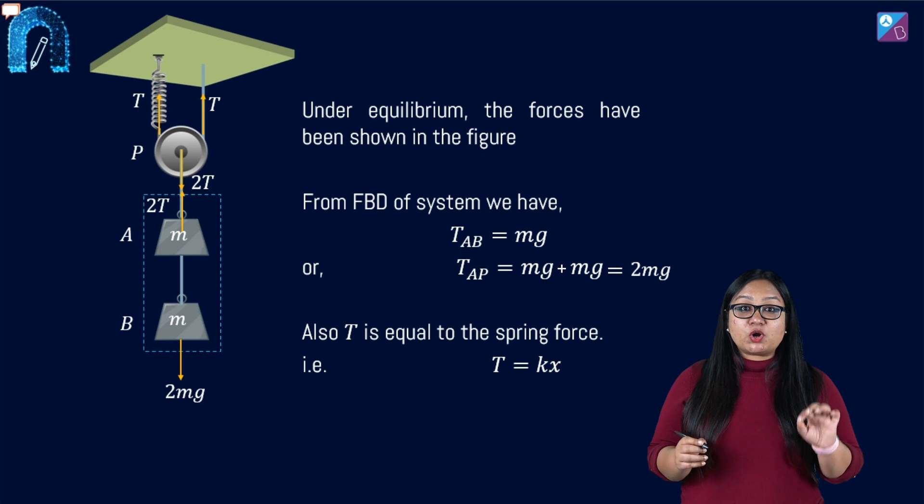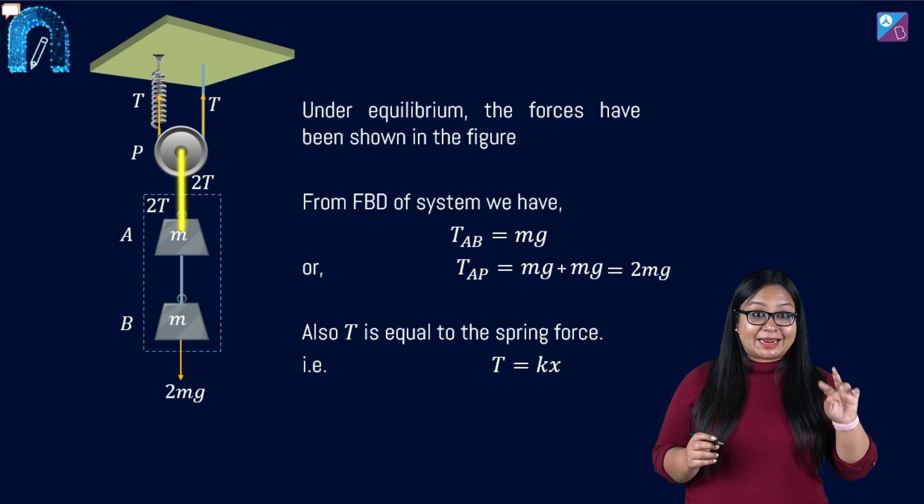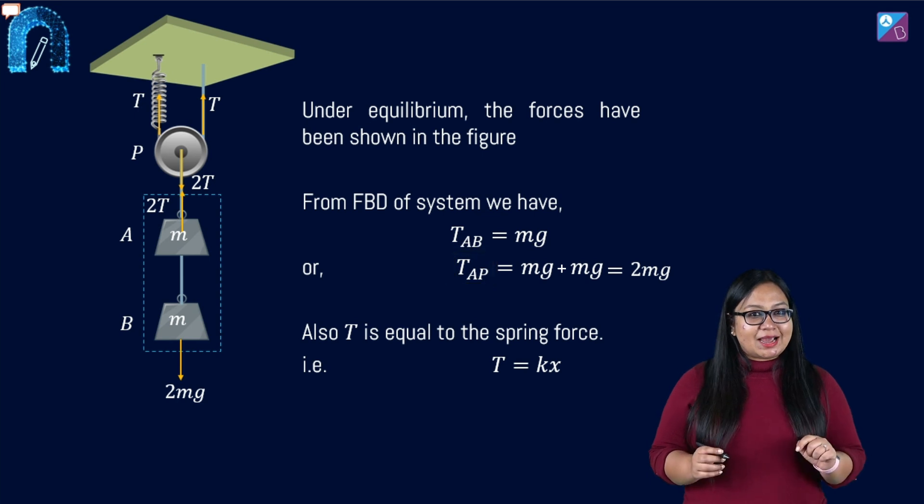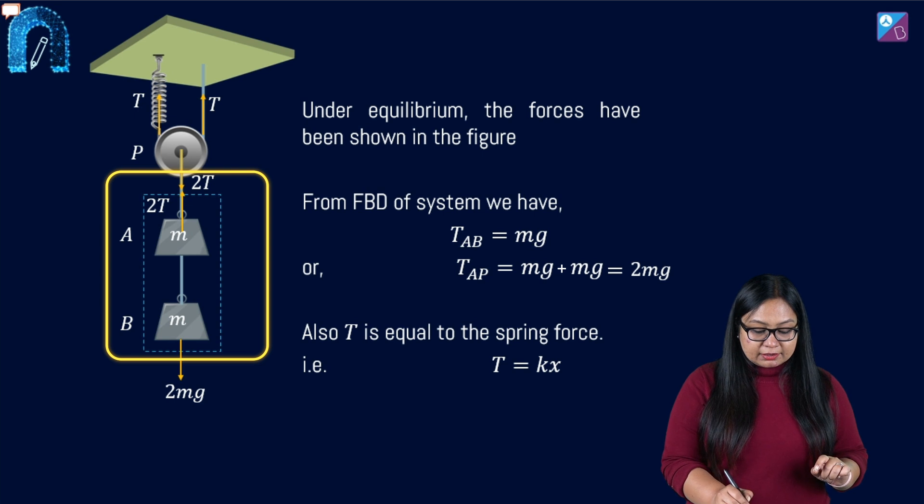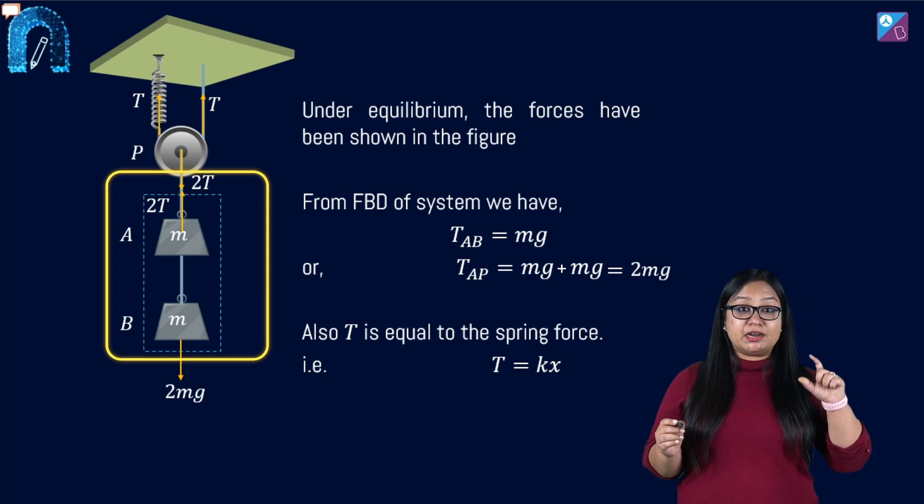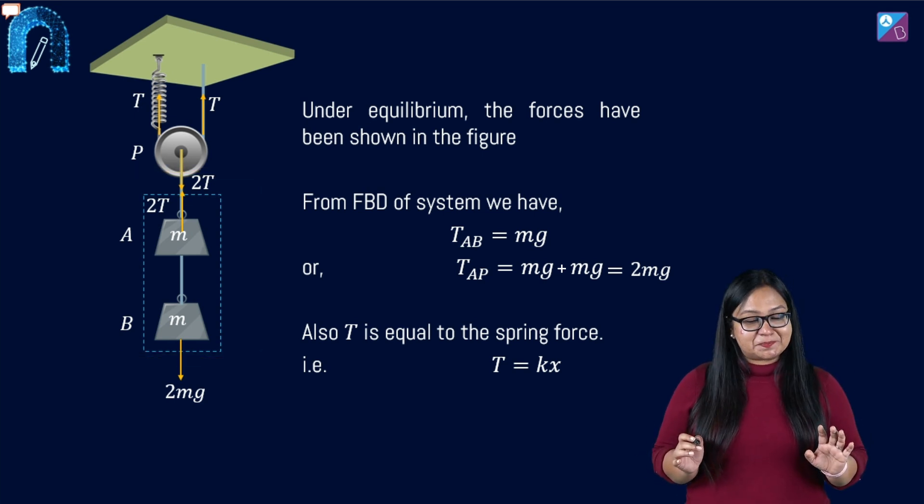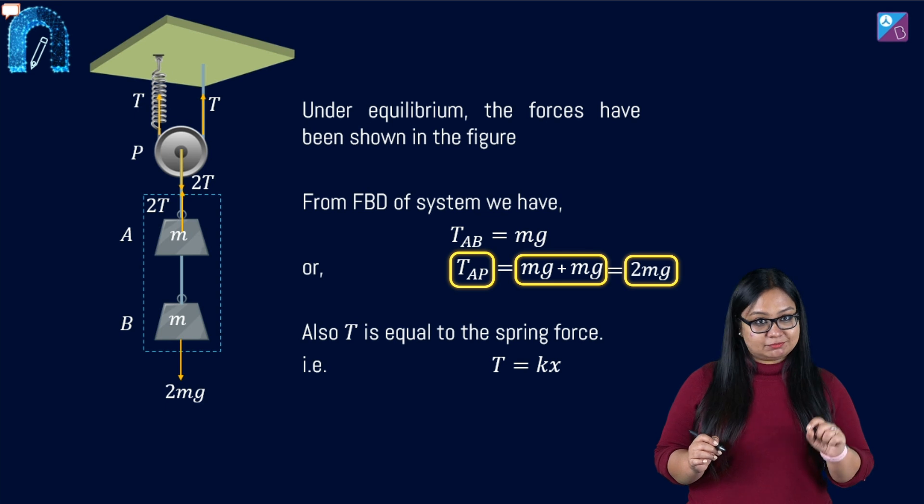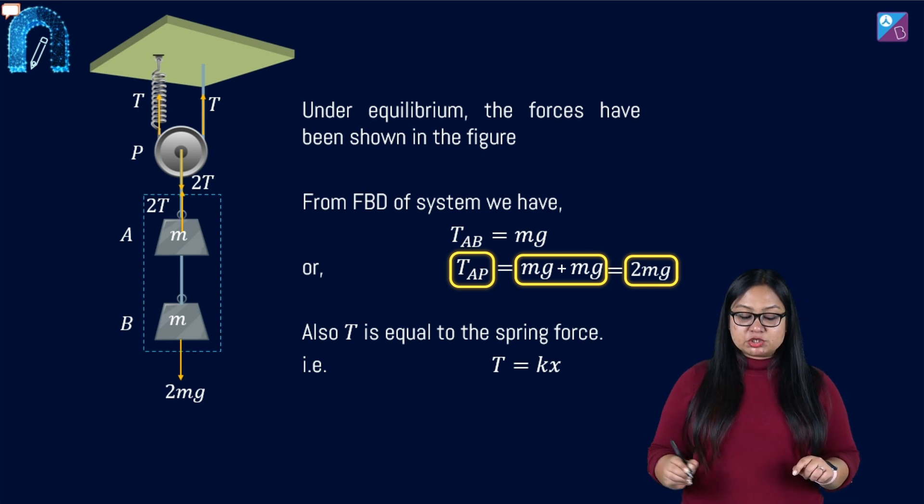And if we talk about the tension in the string connecting A to the pulley, TAP, we can say that this tension is balancing out this entire weight of A and B combined. So TAP becomes equal to MG plus MG, TAP is 2MG.